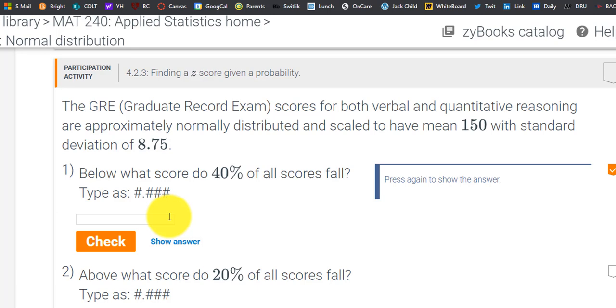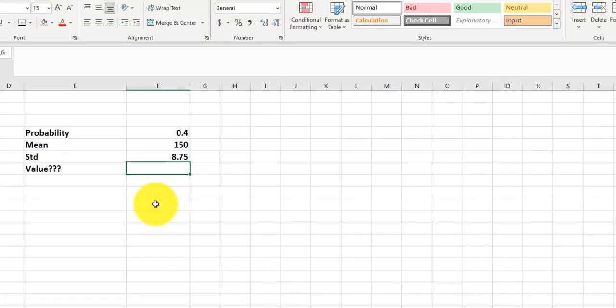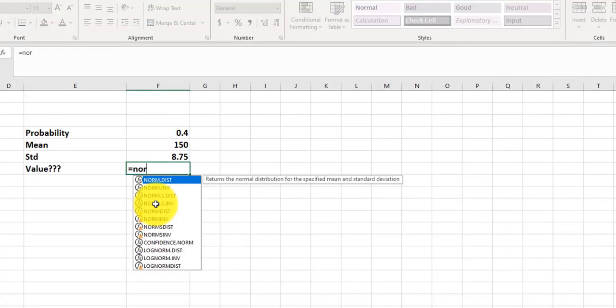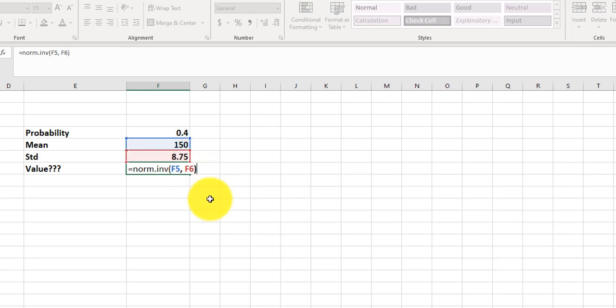So we have an Excel function we can use. So if I jump to my Excel spreadsheet and I type in equals NORM.INV, I think almost like inverse, and actually tells us here, returns the inverse of the normal cumulative distribution for the specified mean and standard deviation. So what was our mean? That was the 150, comma. And what was our standard deviation? That was 8.75. Press enter.